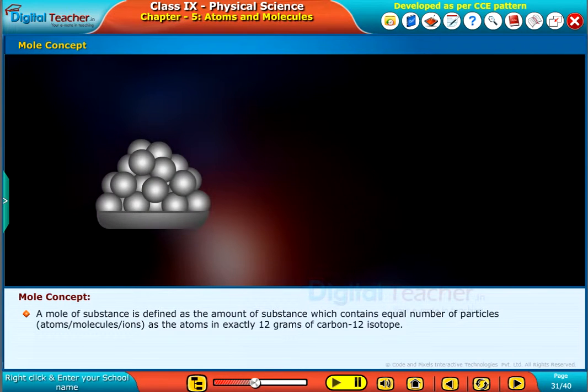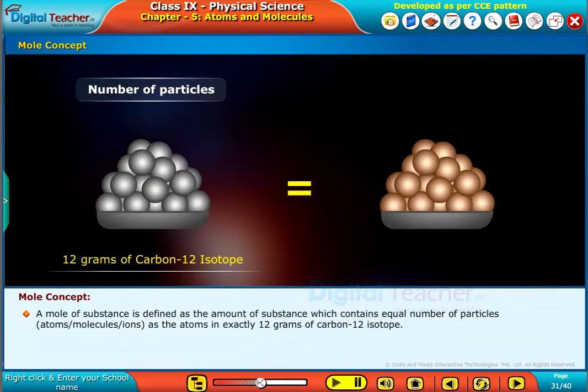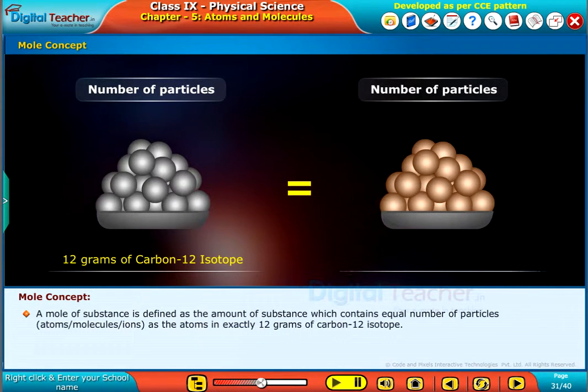A mole of substance is defined as the amount of substance which contains equal number of particles, atoms or molecules or ions as the atoms in exactly 12 grams of carbon-12 isotope.